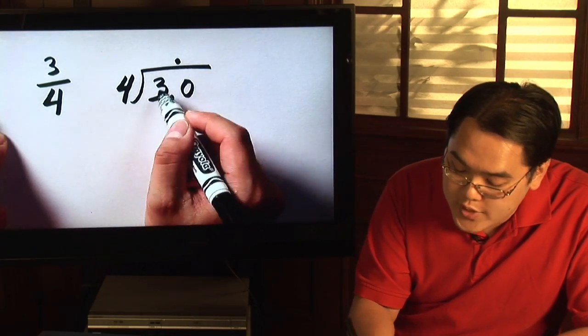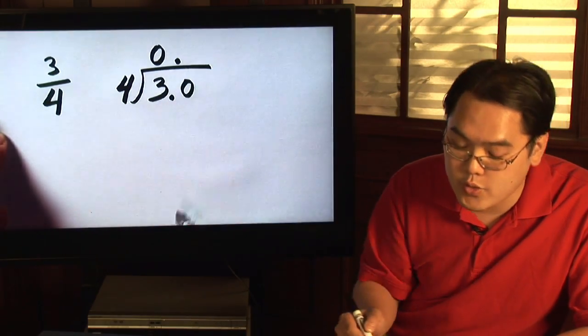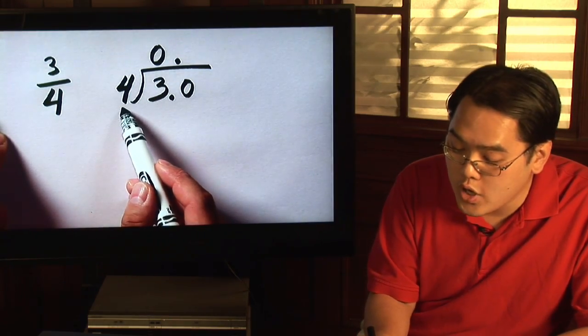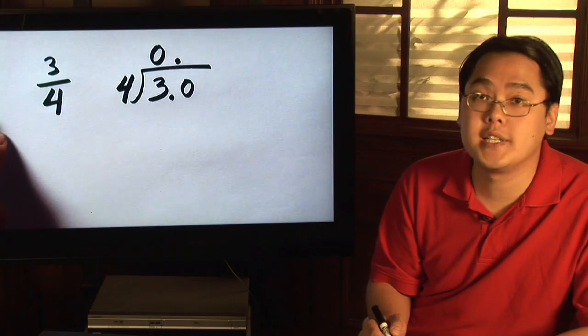So because you know 4 does not go into 3, 4 goes into 3 zero times. So now you're going to move on to the next step and ask yourself: 4 goes into 30 how many times?